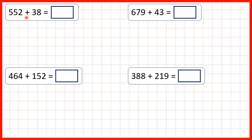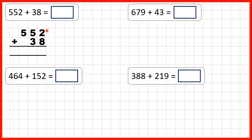We need to add using column addition. First, we have 552 plus 38. So we set the question out with our digits lined up on the right-hand side. Because we count place values from the right, so if we've lined the digits up on the right, then our ones, tens and hundreds columns will be lined up as well.